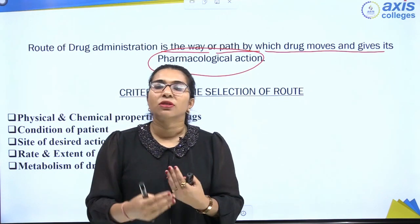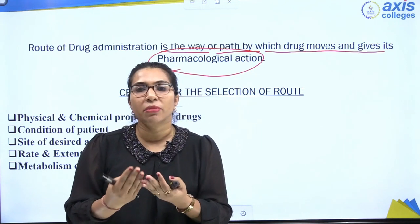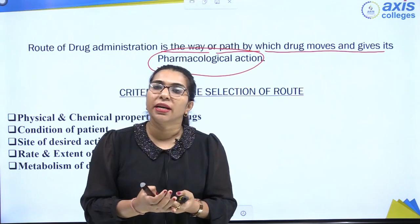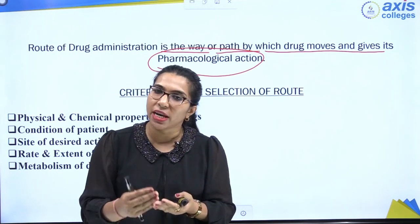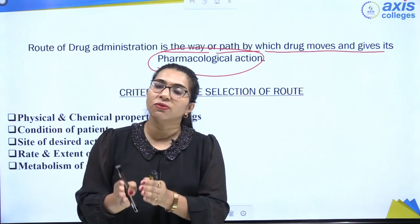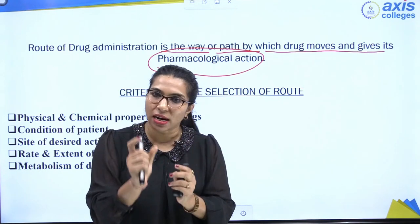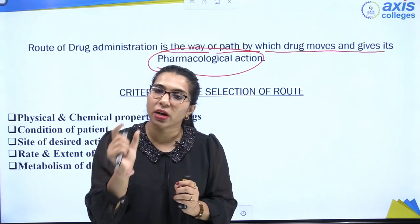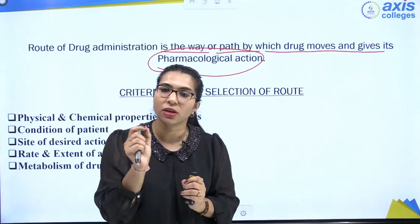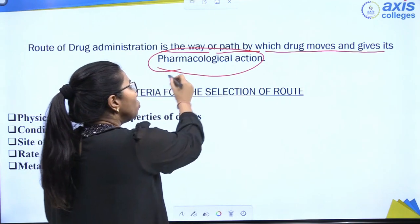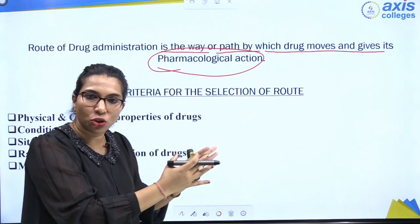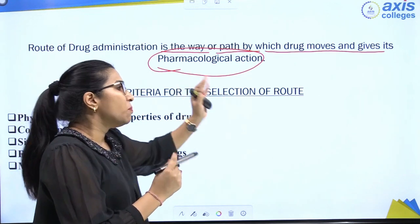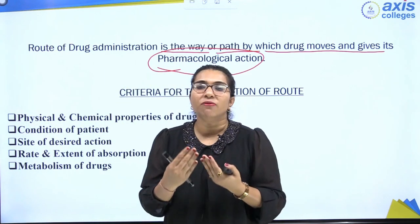The route of drug administration is the way or path by which the drug moves and gives its pharmacological action. Pharmacological action is the therapeutic action — for example, if you are taking medicine for fever, the drug relieves the fever. That is its pharmacological action, and the pathway used to produce that action is known as the route of drug administration.